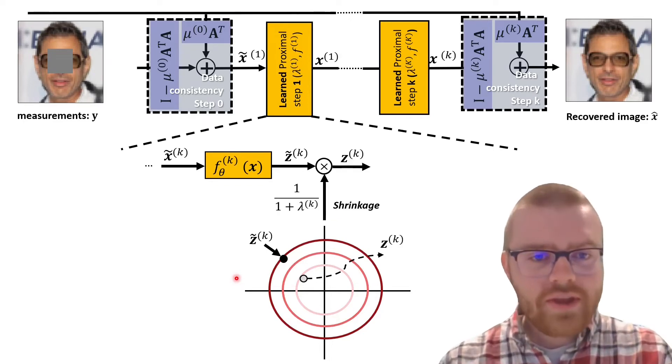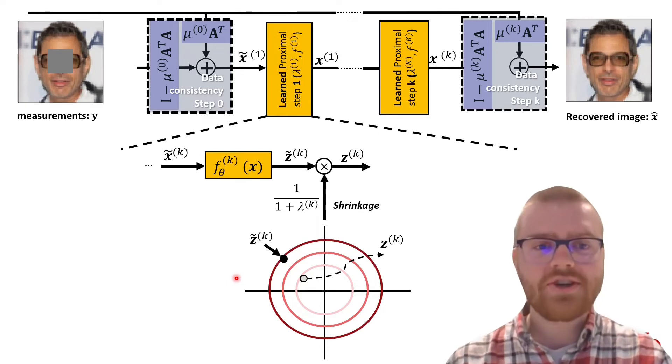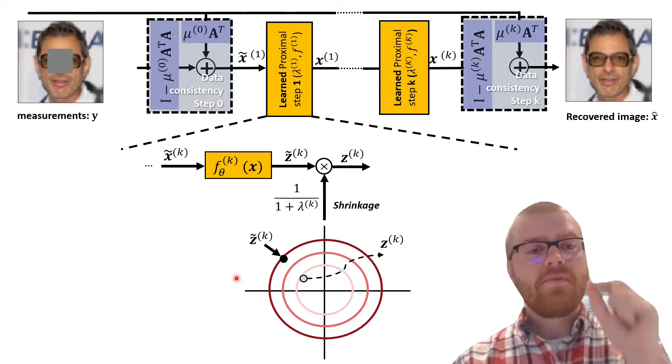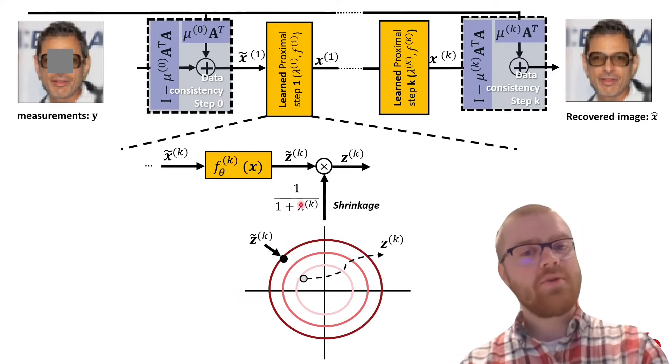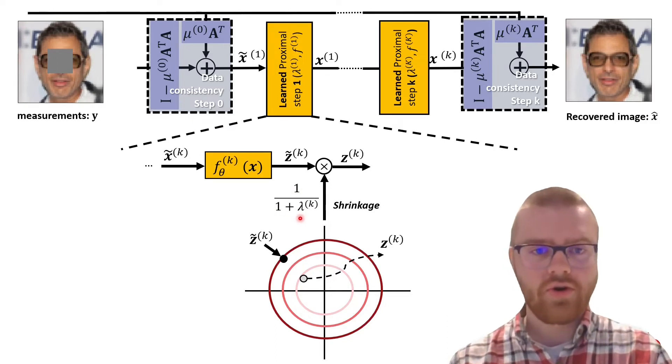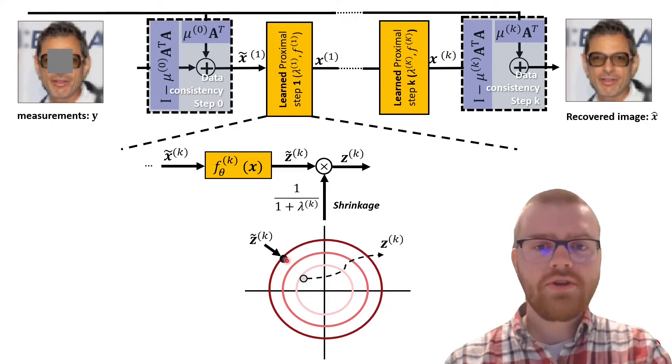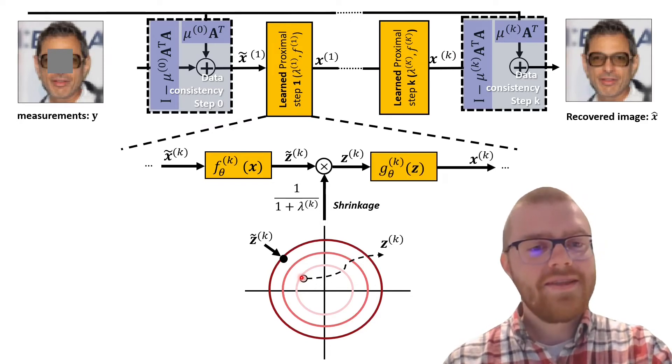And then we know that the more likely solutions, so better images are actually more close to the origin. What we do is we perform a shrinkage step. Over here we multiply by one over one plus lambda, where this lambda is also learned and positive, so bigger than zero. What we do is we move actually closer to the origin.